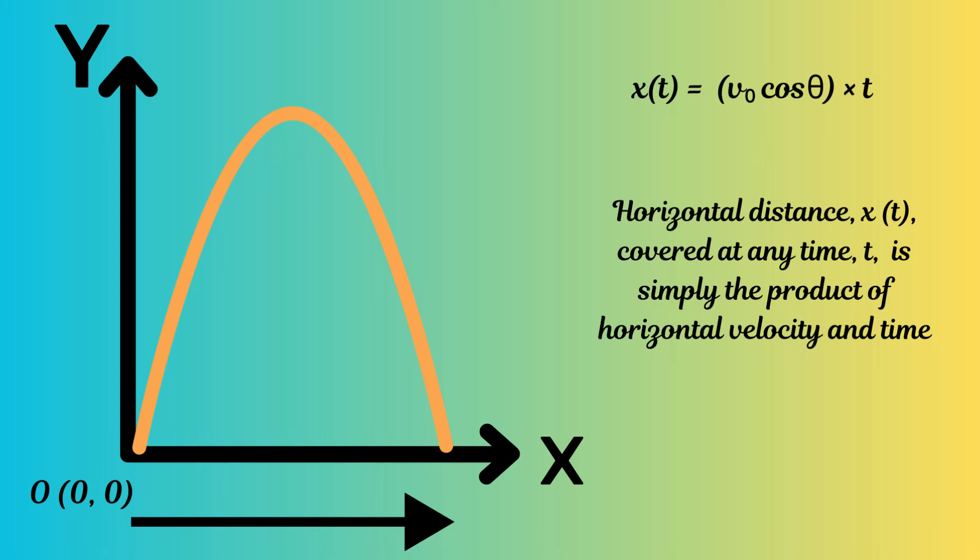Because the horizontal acceleration is zero and the horizontal velocity remains constant, we get the horizontal distance covered at any point in time by simply multiplying the constant horizontal velocity component with the elapsed time. This gives us the horizontal distance x as v₀ cosine theta multiplied by t. This is all we need to analyze the horizontal motion of the projectile.